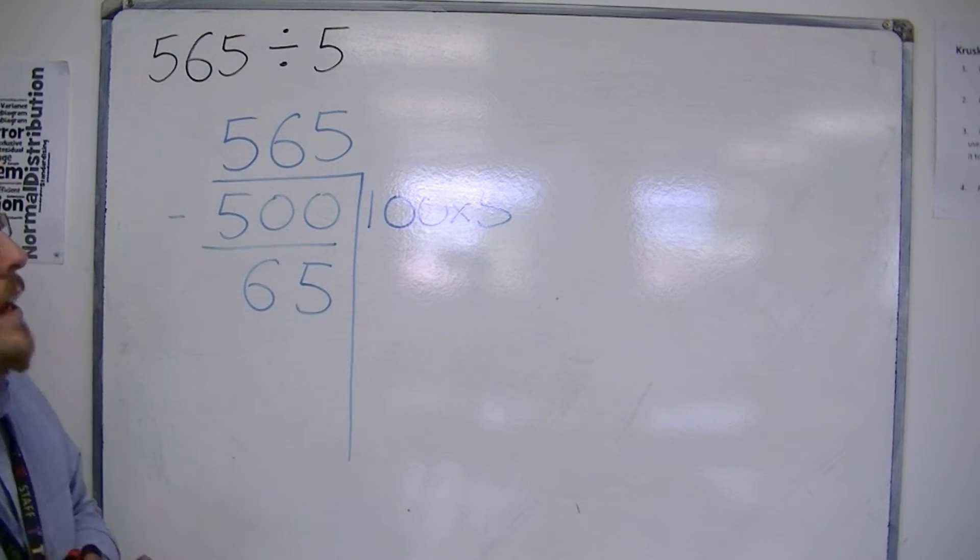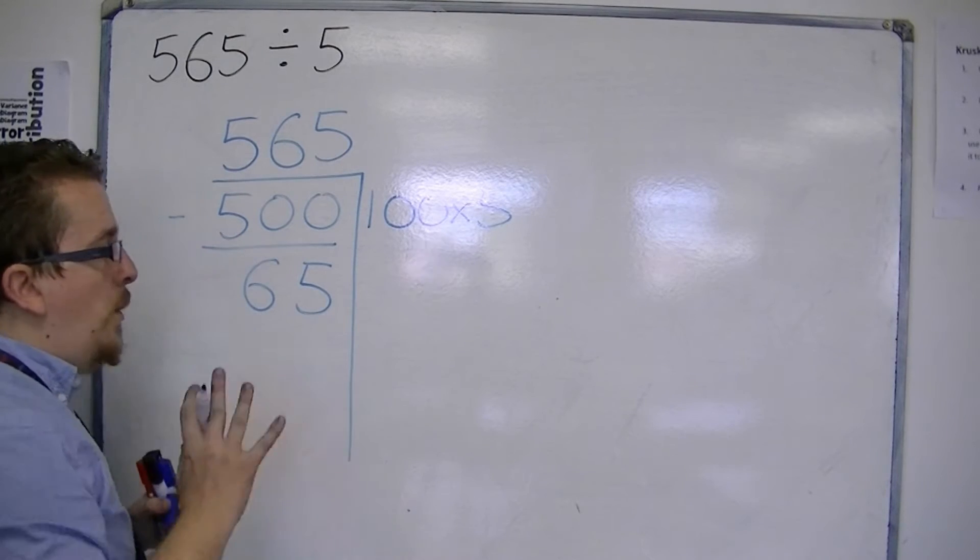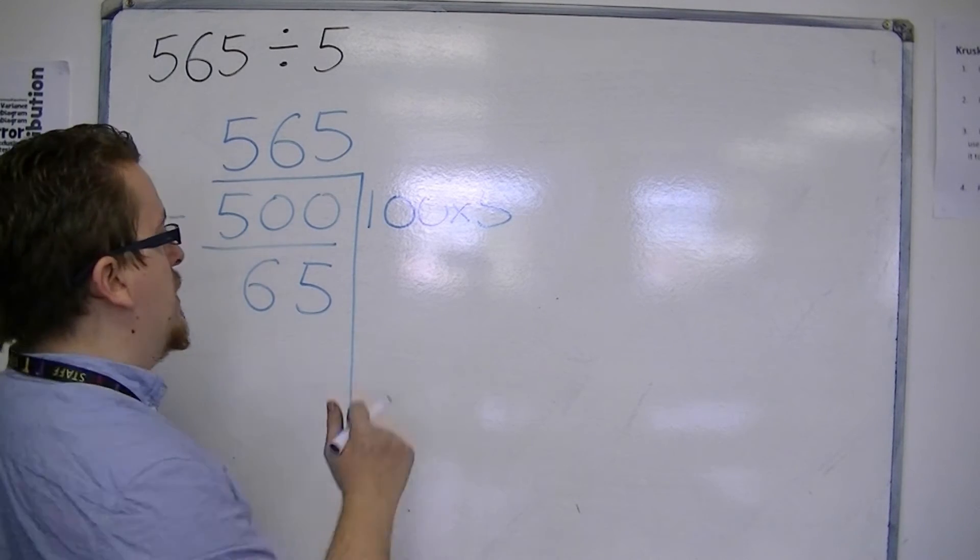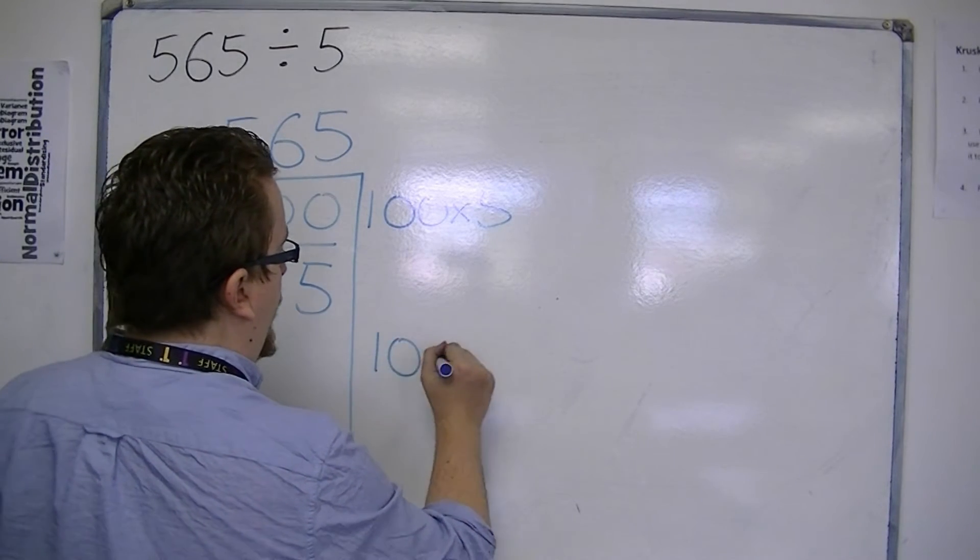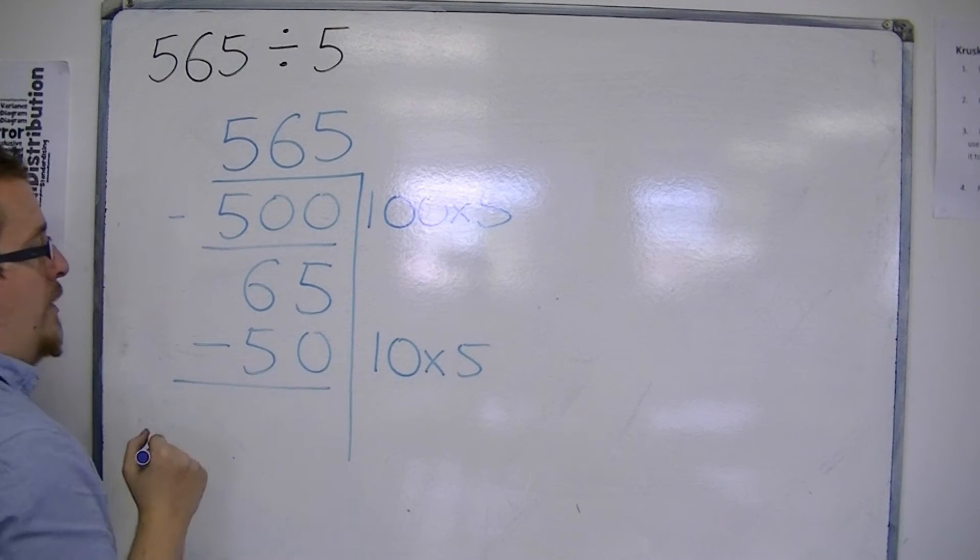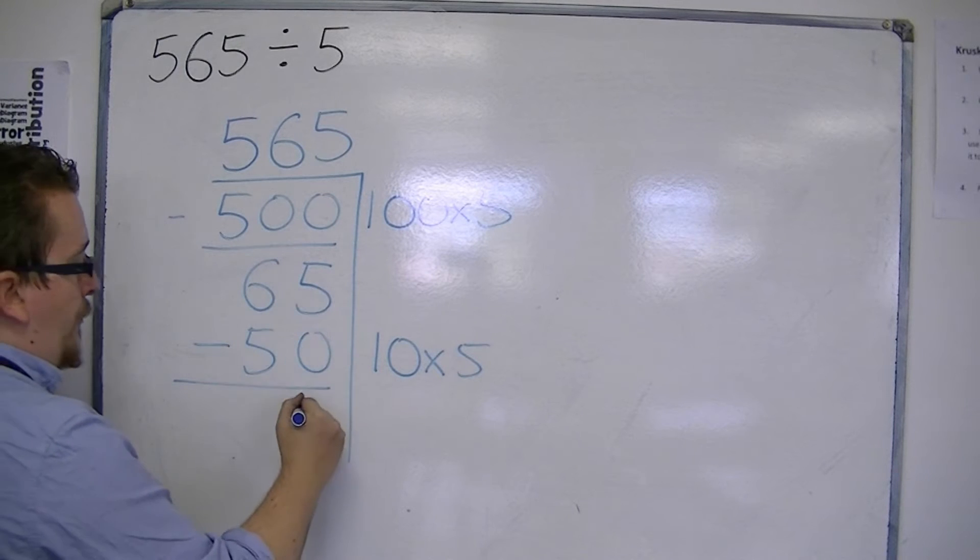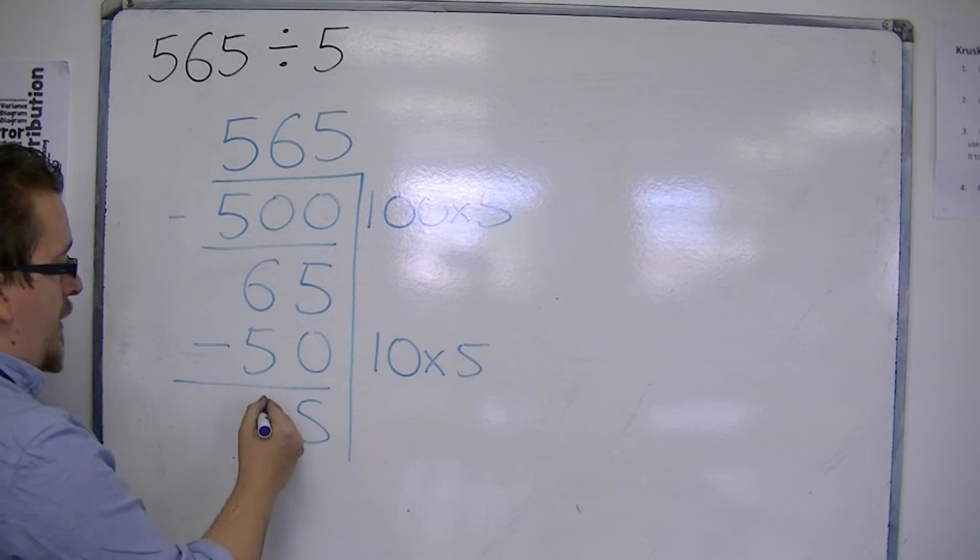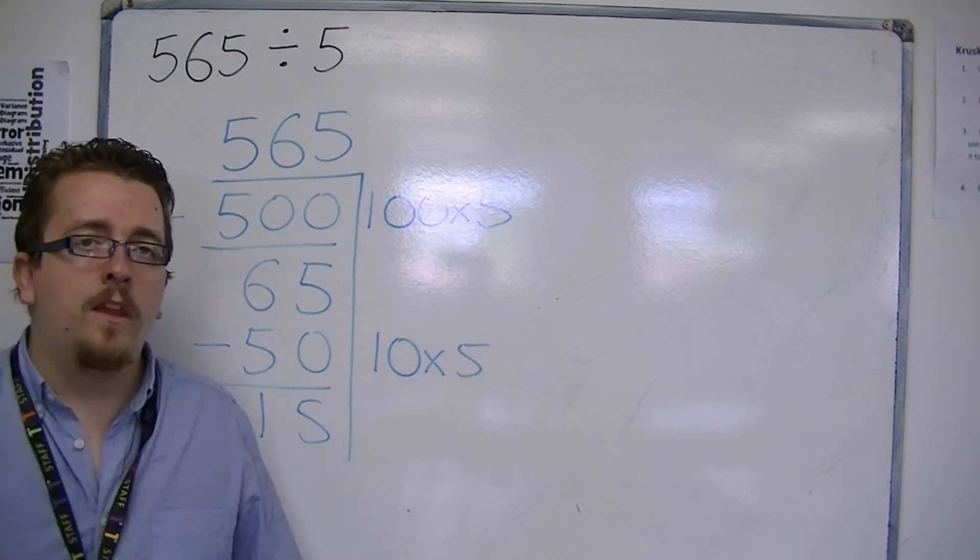Then I think to myself, okay, well, 65, I know I can fit 10 lots of 5 into that, because 10 lots of 5 is 50. And then we do another subtraction. 5 take away 0 is 5. 6 take away 5 is 1. 15.